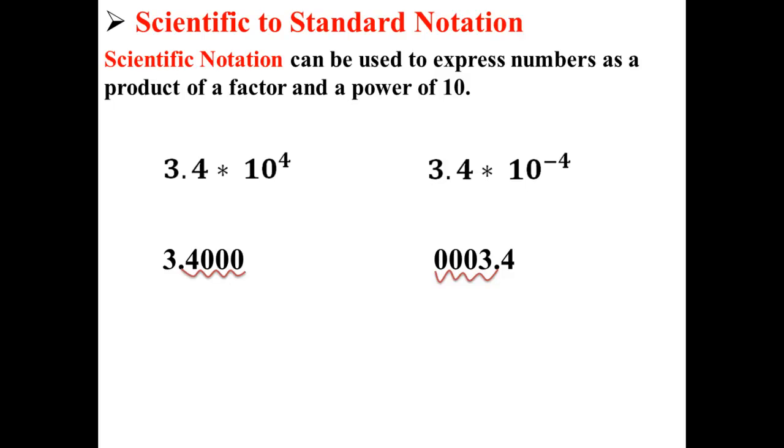So here we take our 3.4 and move the decimal point four points to the right, while on the other one on the right we take 3.4 and move it four points to the left.